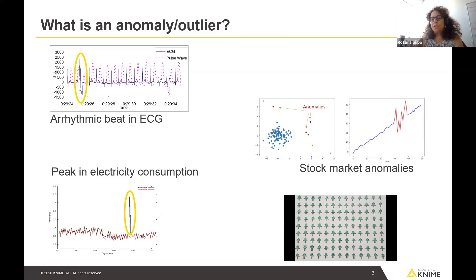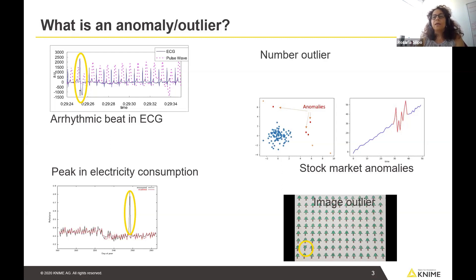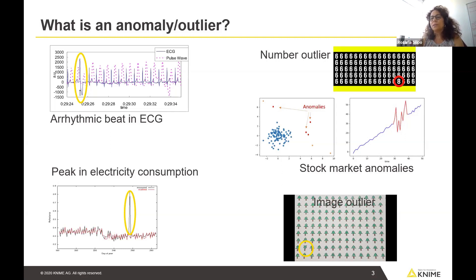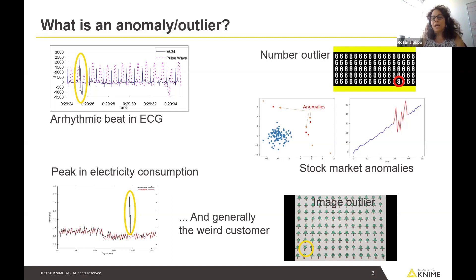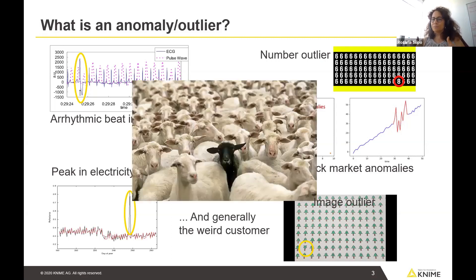If we have image processing and we have a series of images and we know what to expect from these images, and then we are looking for the one image outlier which is slightly different from the others. We have a sequence of numbers with one number that sticks out. And when we talk about customers, we always have that weird customer that stands out from the rest. So that's pretty much what an anomaly or an outlier is — something that is out of the ordinary and something that we don't expect to find in the data.